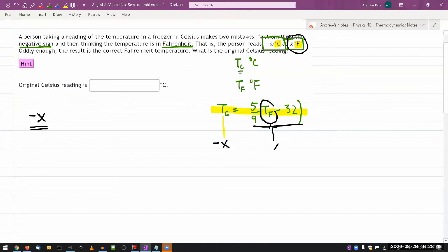So I would plug in X here. And I keep this equality here because the question says that, oddly enough, the result is still correct. So if the result isn't correct, then it's just a mistake and it's all nonsense. But because by some pure chance that those two led to the correct reading still, so I can keep this equality sign here.